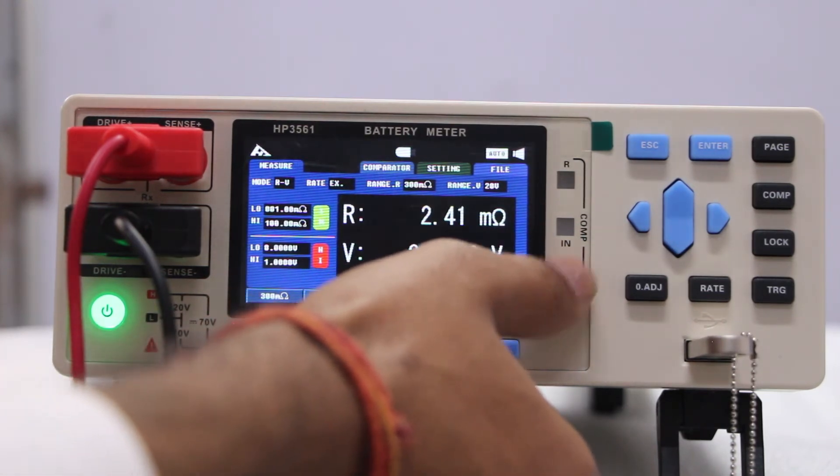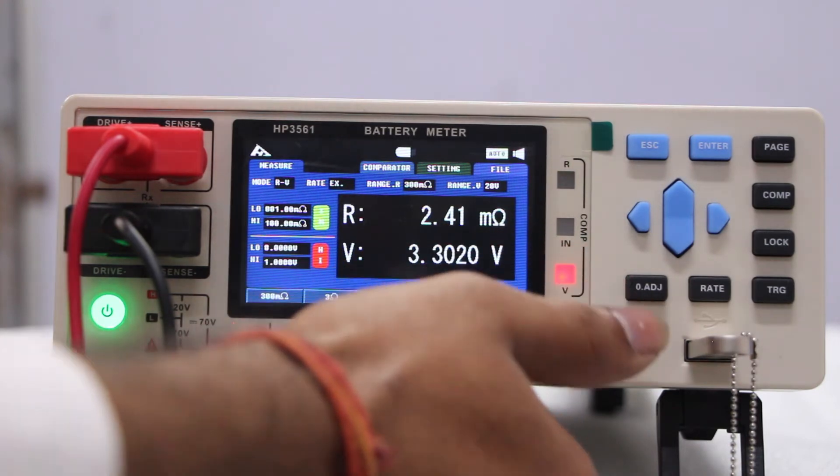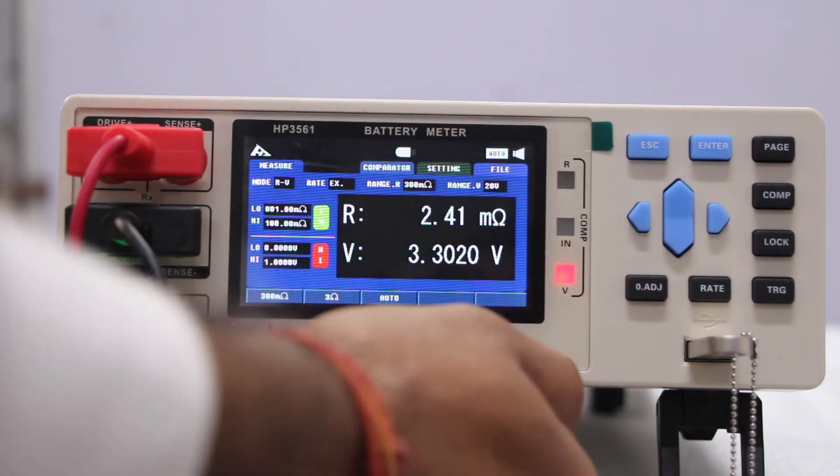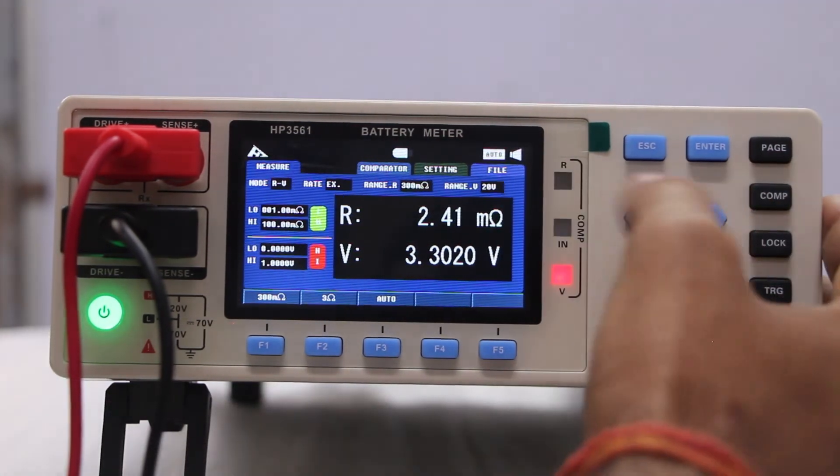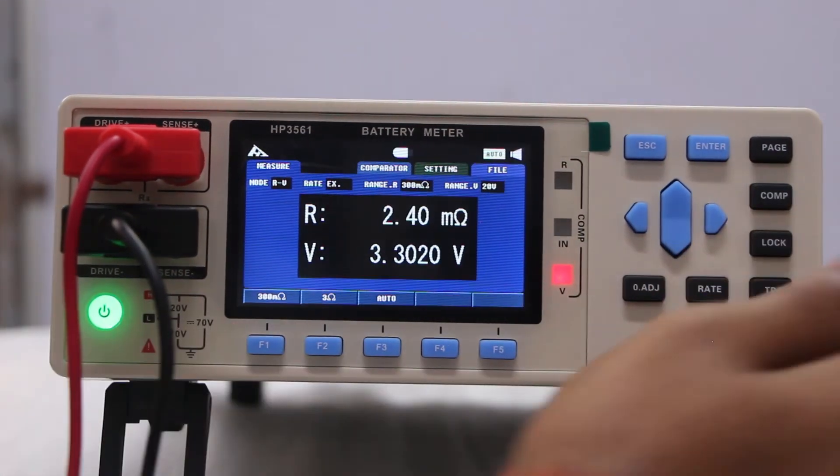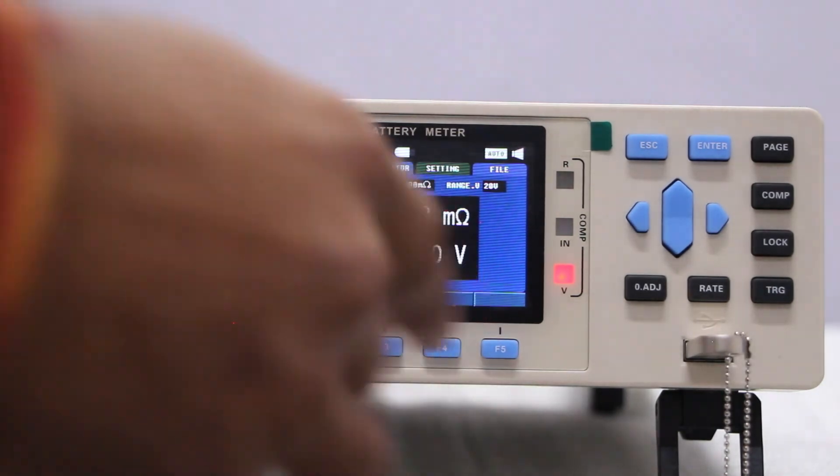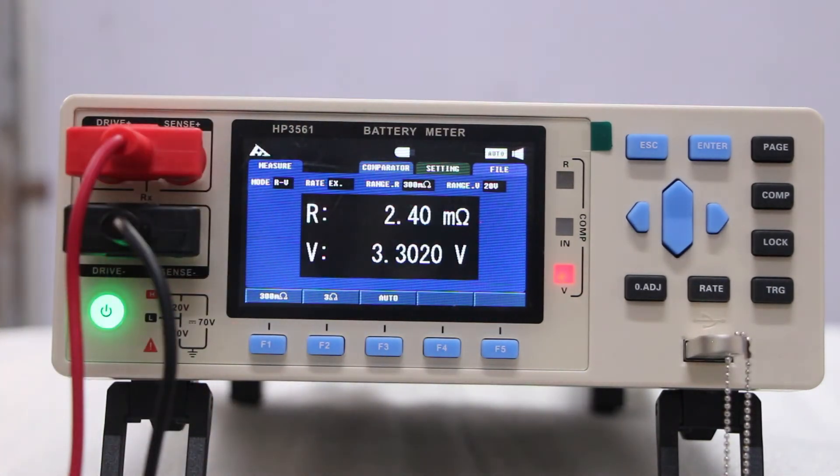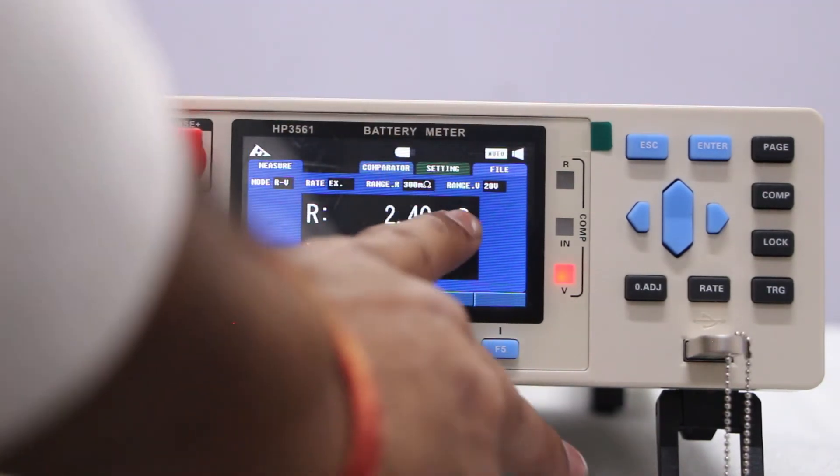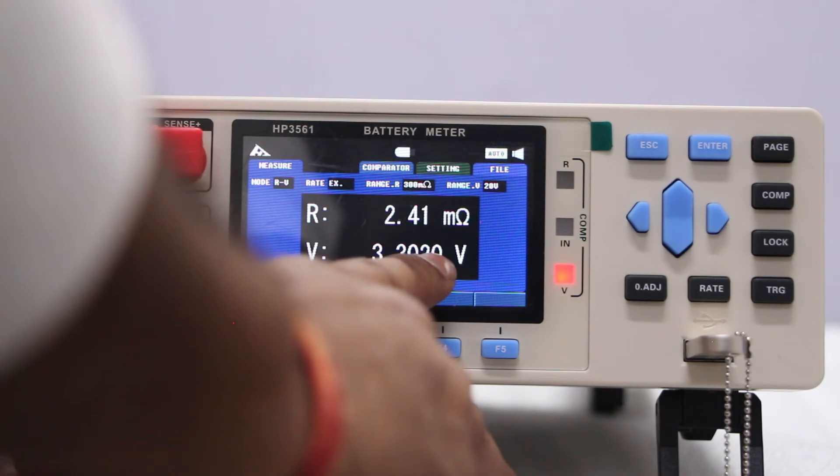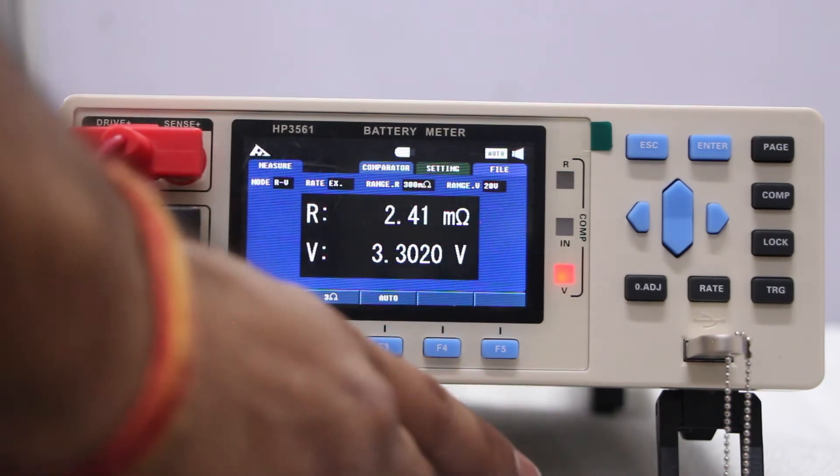This is your comparator function when if you want to off the comparator just click on comparator it will be off. Setting means different type of setting that you want to set like whether you are using only you can only test R means only you can only test resistance you can only test the voltage separately or you can only test both together.